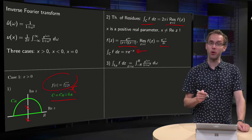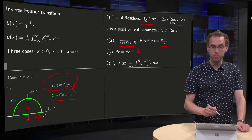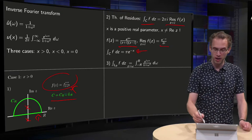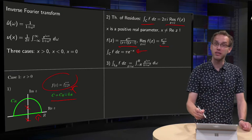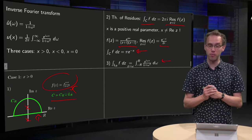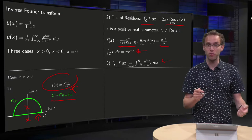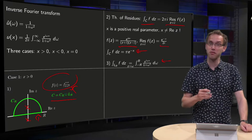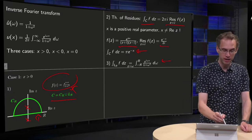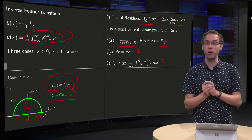The integral along L_R becomes nice: just parameterize z = ω and you get the integral from −R to R of e^{iωx} / (1 + ω²) dω. That's of course what we want, because we want to send R to infinity and then we will get the integral we need.